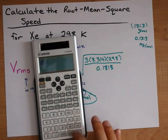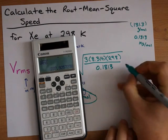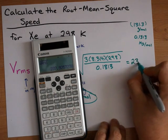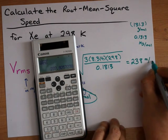Then, I need to take the square root of that answer, and I end up with 238 meters per second.